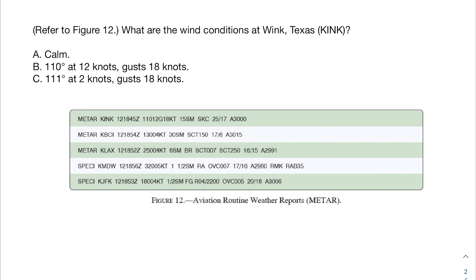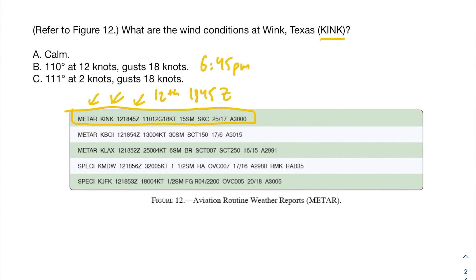Let's move on to the second practice problem. We're asked for the wind conditions at — I love this name — Wink, Texas, abbreviated KINK. We have three answer choices, which we're going to ignore for now. Let's find it within our METAR. Not really important: the airport code, the date — the 12th — and the time at which the METAR was issued: 1845 Zulu, so 6:45 PM. The next part is what we're really interested in — the wind section.